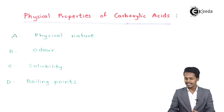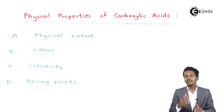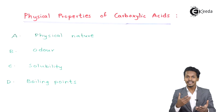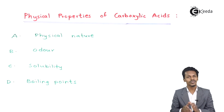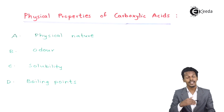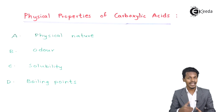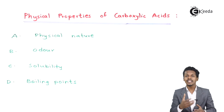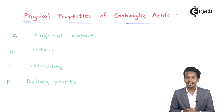Talking about the next point — boiling point. It has been found that carboxylic acids, which contain the carboxylic group (C double bond O, OH group), have a higher boiling point compared to the corresponding alcohol or aldehyde. The reason behind this is that they form hydrogen bonding.